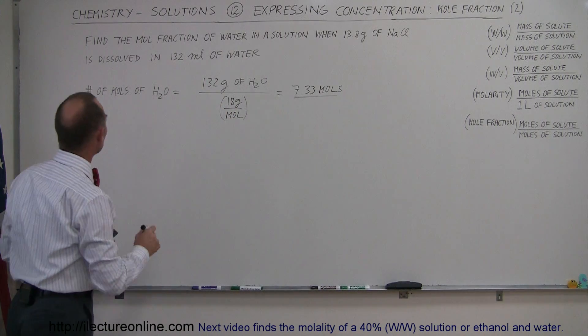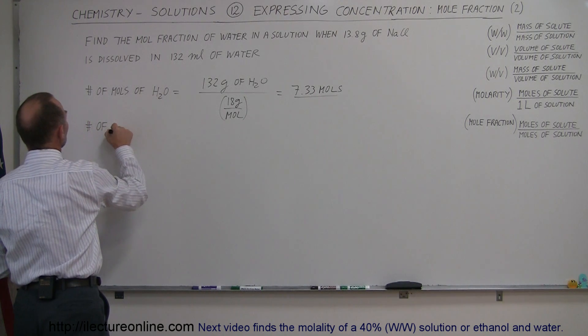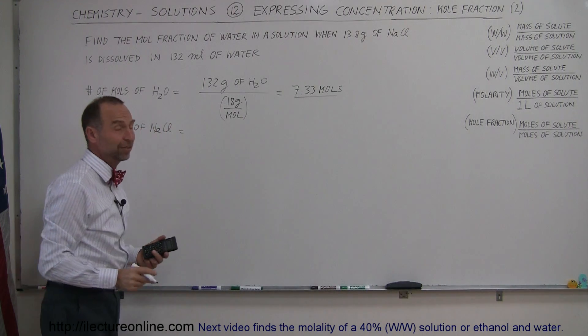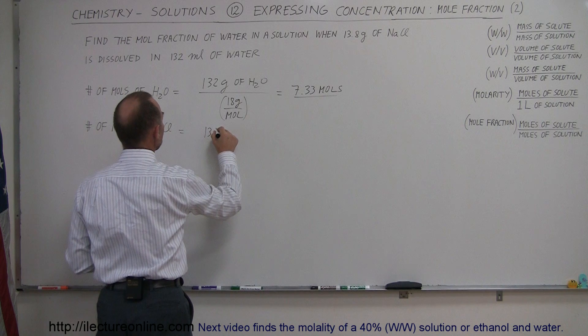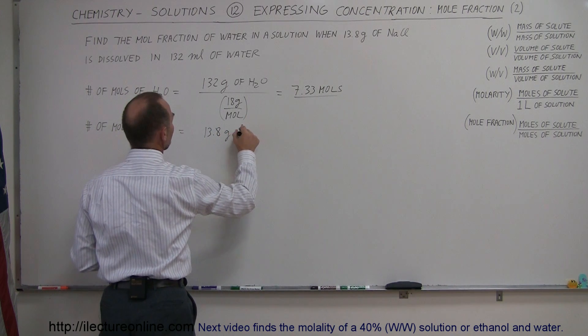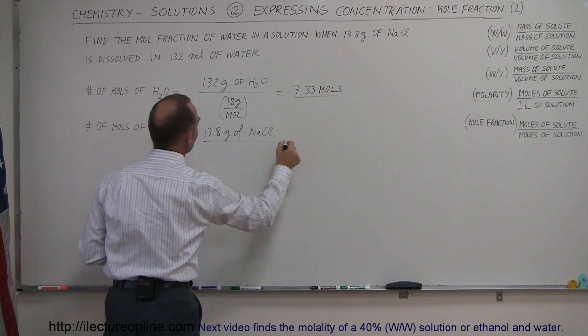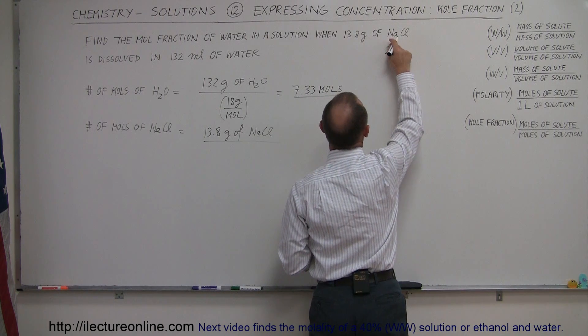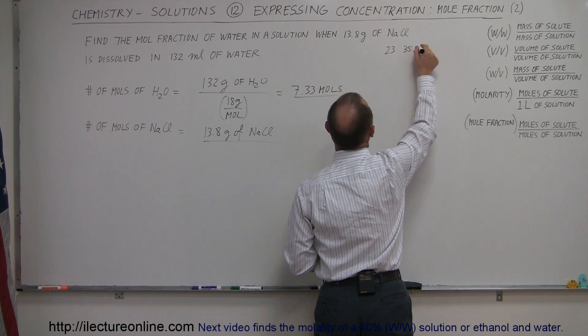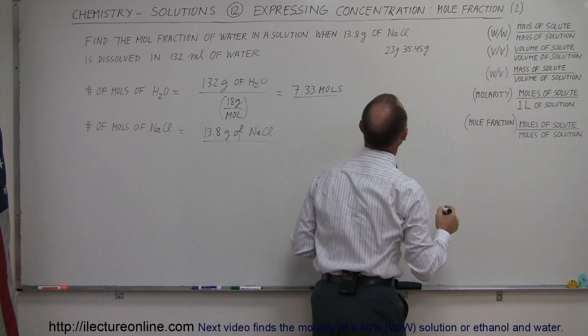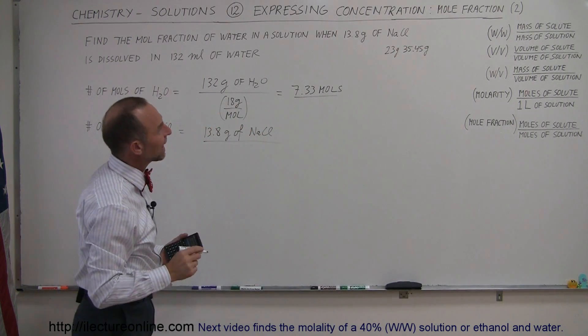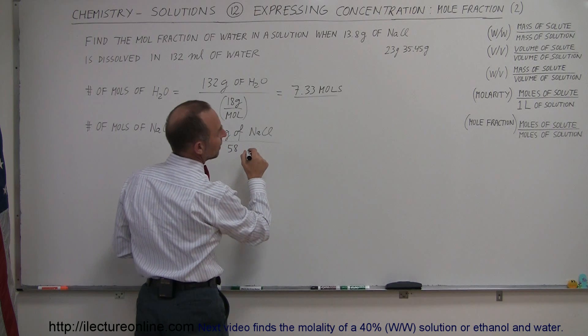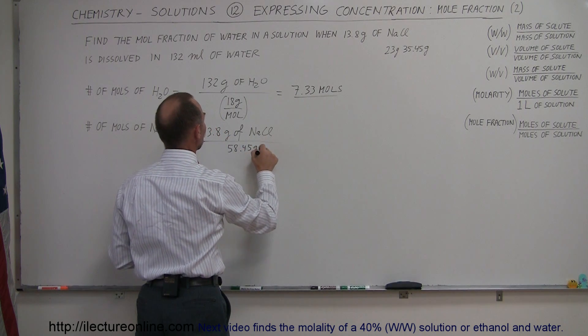Now we need to know the number of moles of the sodium chloride. The number of moles of sodium chloride is equal to... they give us again the mass, so that's 13.8 grams of sodium chloride. Now we have to divide it by the molar mass of sodium chloride. The molar mass of sodium chloride is 23 grams per mole for sodium and 35.45 grams per mole for chlorine.